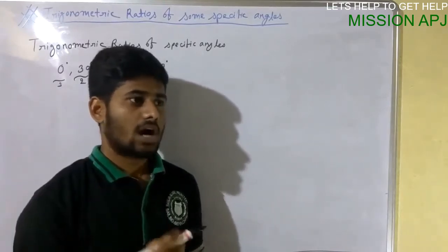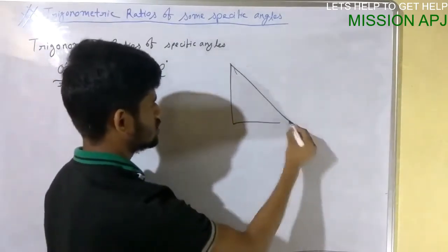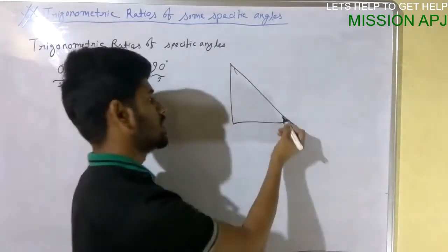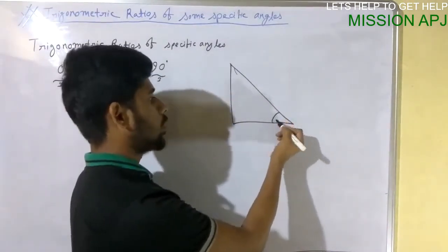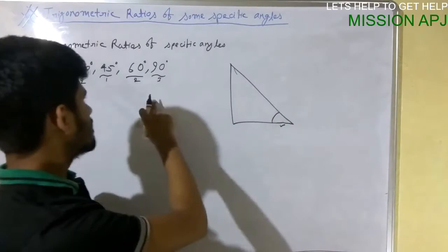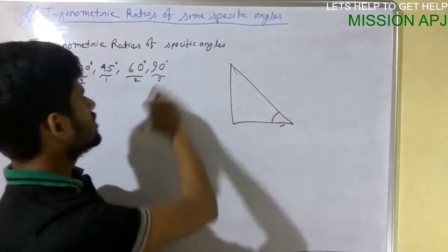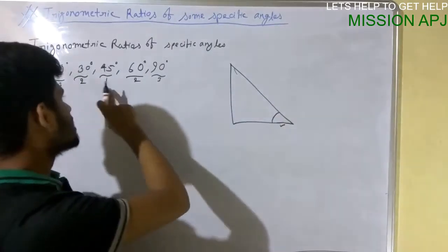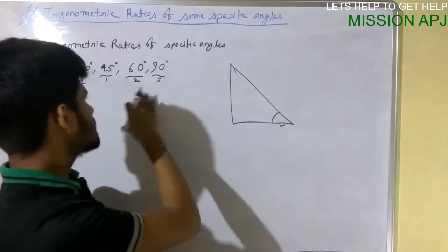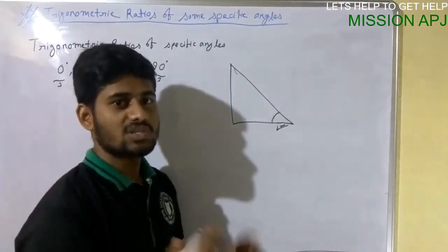Let us draw a triangle first. Whenever we find trigonometrical ratios, we have to find them by considering one acute angle. With respect to that acute angle we always find out the values. In this scenario, the specific angles are 0°, 30°, 45°, 60°, and 90°, and by considering these values as our acute angle, we are going to find the trigonometrical ratios.